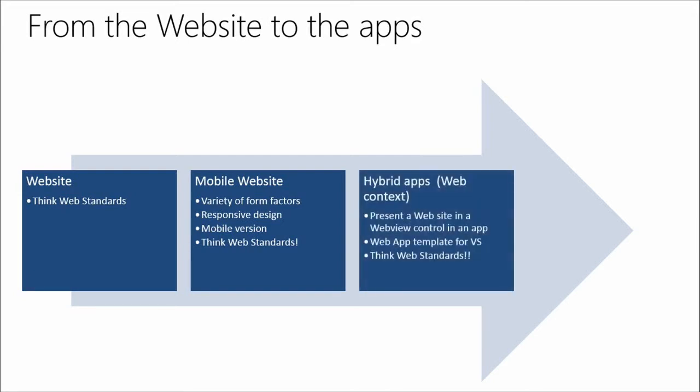Form factor, responsive design, mobile version — again, think web standards. These devices are running browsers that comply or not to web standards. Once you have a mobile version of the website — still pure online — now you want to go with something we call hybrid apps: mix and match native and wrap HTML code into a native app, still having the content online. We call that web context, and that's illustrated by the web app template for Visual Studio, which we'll talk about in about half an hour.